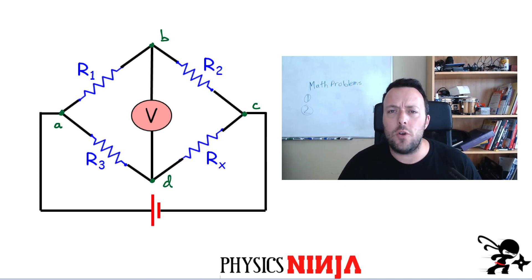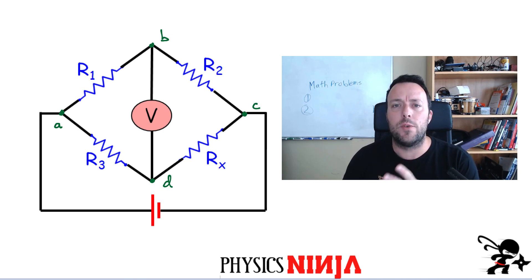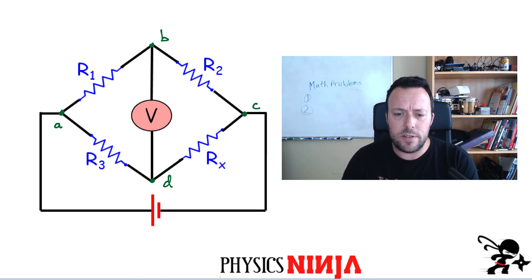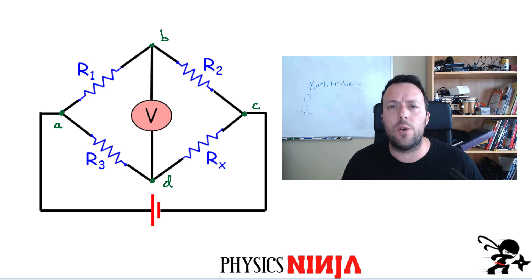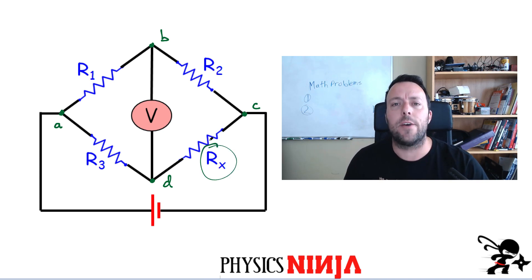A Wheatstone Bridge is a circuit, as I've shown here. It typically uses four values of resistors and one of the values is unknown. In this case the unknown resistance is this one, this value of Rx.